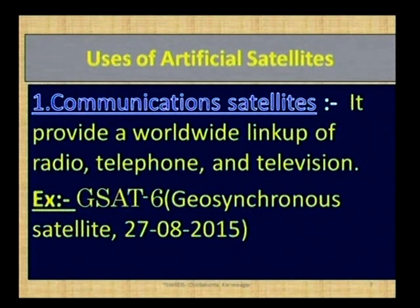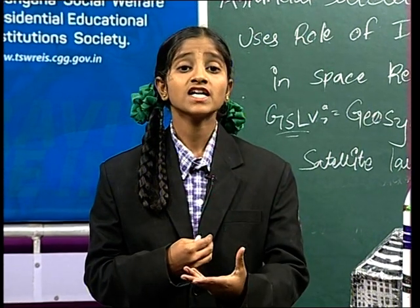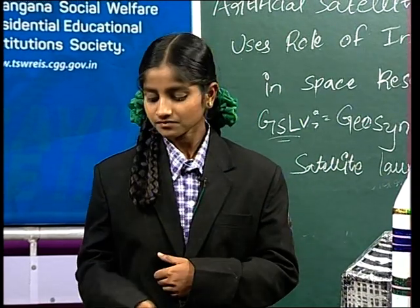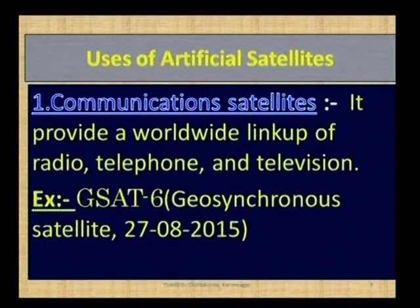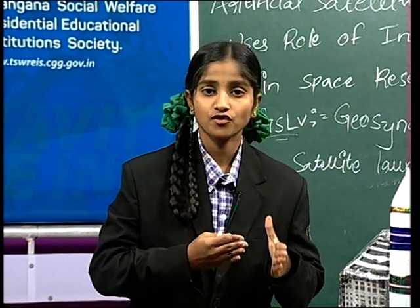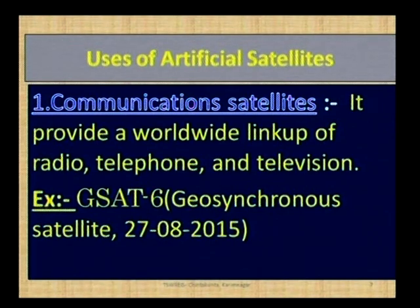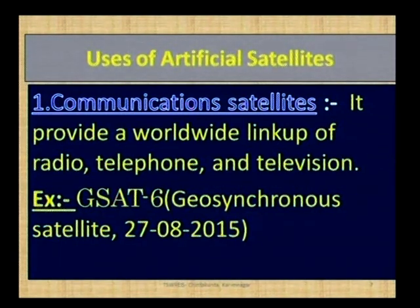Uses of artificial satellites — first one is communication satellites. The best example is: here I am teaching and you are sitting in your schools listening to my lesson, because of satellites only. By the help of satellites you are able to listen to my lessons when I am in Hyderabad. Communication satellites provide worldwide link-up of radio, telephone, and television. Example: G-SAT-6, a geosynchronous satellite, launched on 27th August 2015.